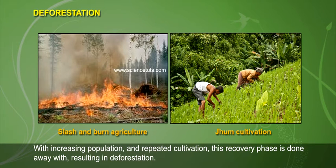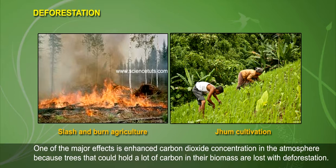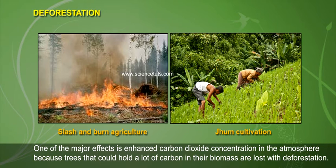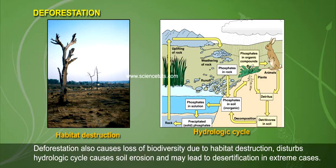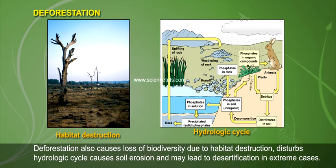One of the major effects of deforestation is enhanced carbon dioxide concentration in the atmosphere, because trees that could hold a lot of carbon in their biomass are lost. Deforestation also causes loss of biodiversity due to habitat destruction, disturbs the hydrologic cycle, causes soil erosion, and may lead to desertification in extreme cases.